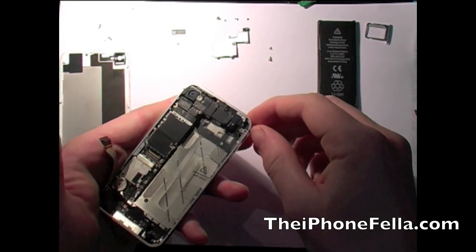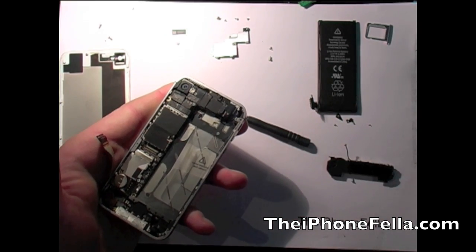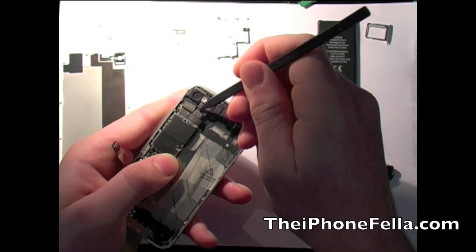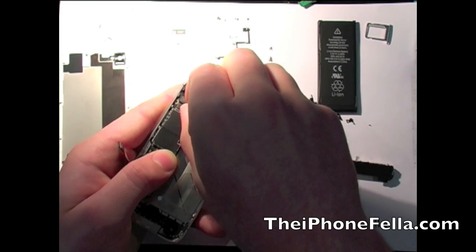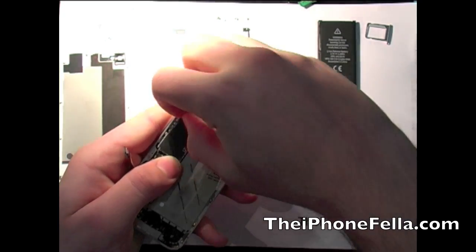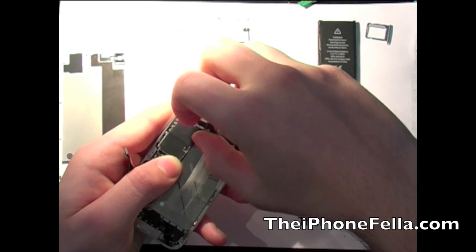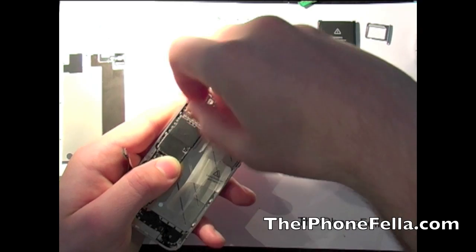Next you can use your nail to simply disconnect the connectors on the top of the logic board. The connector relative to the bottom of the camera is holding the camera in place. Simply disconnect that and the camera should just come right out.